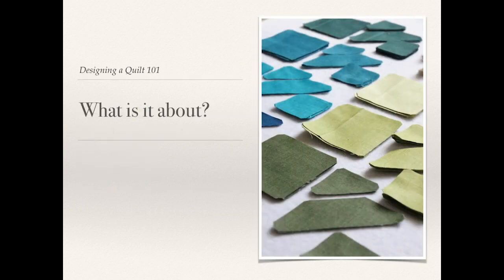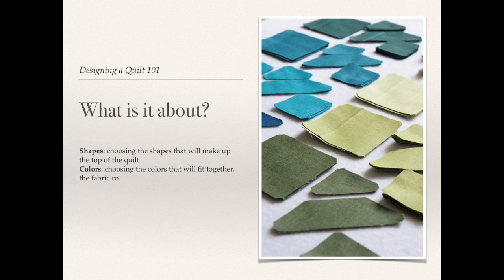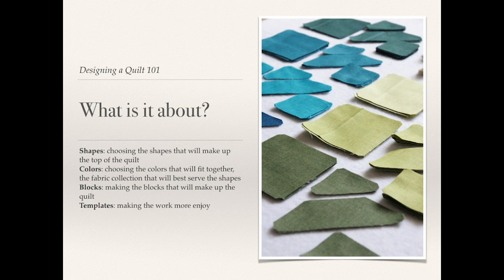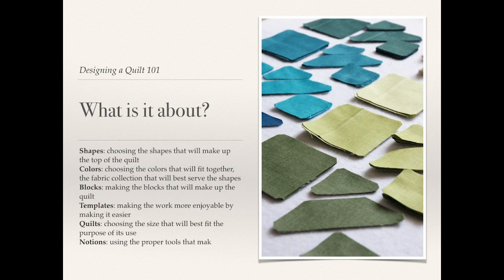What is it about? Shapes — choosing the shapes that will make up the top of the quilt. Colors — choosing the colors that will fit together the fabric collection that will best serve the shapes. Blocks — making the blocks that will make up the quilt. Templates — making the work more enjoyable by making it easier. Quilts — choosing the size that will best fit the purpose of its use. And finally, notions — using the proper tools that make the goal easier to reach.